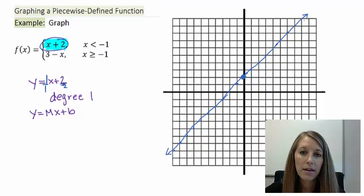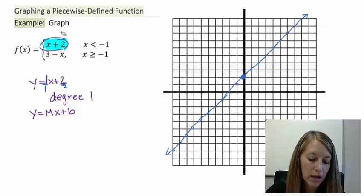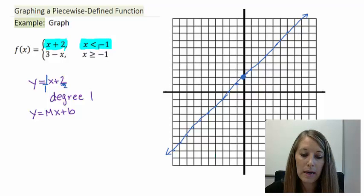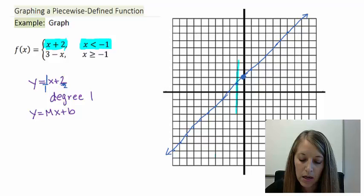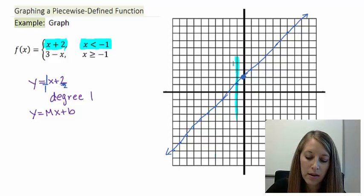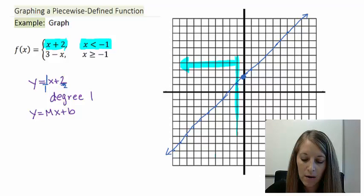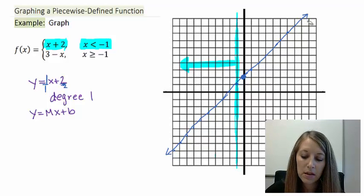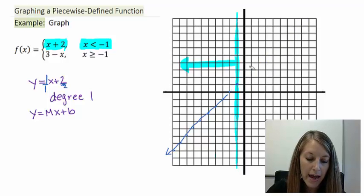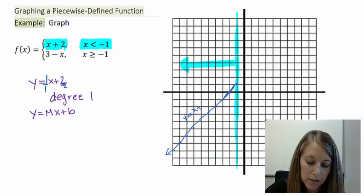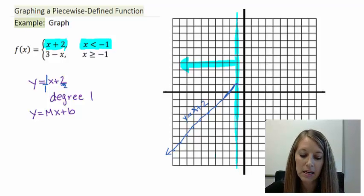Now I want to interpret this graph only on the interval applicable to this piece — that is, only when x is less than negative 1. I look at my x values, find where x equals negative 1, and I only want the left-hand portion of the graph separated at that point. So I need to get rid of everything to the right of that vertical marker. This gives me the graph of y equals x plus 2, but only when x is less than negative 1.